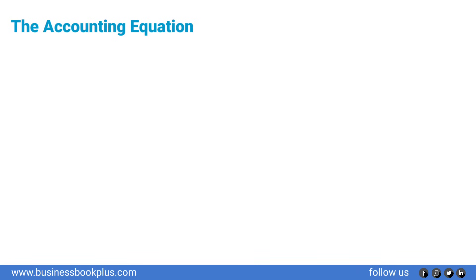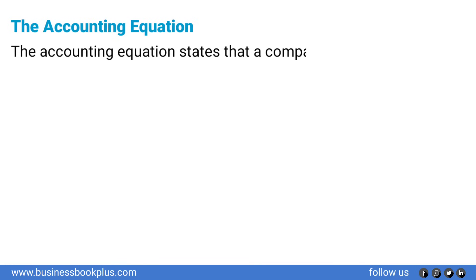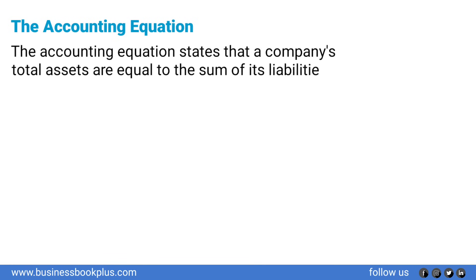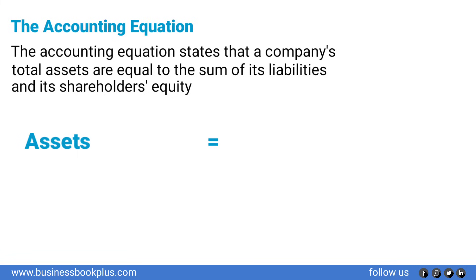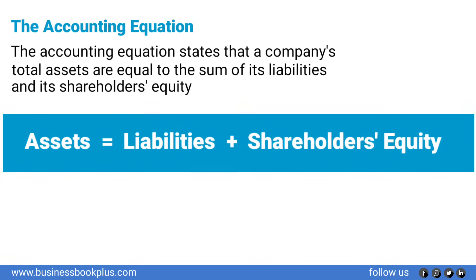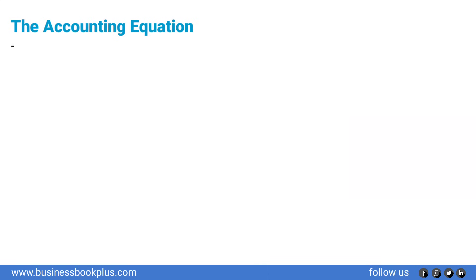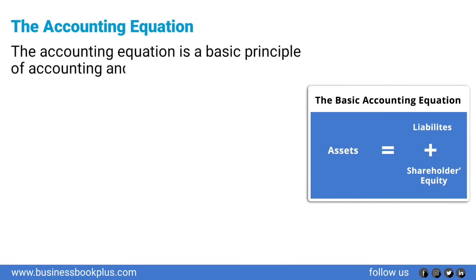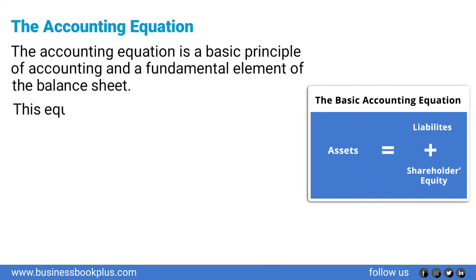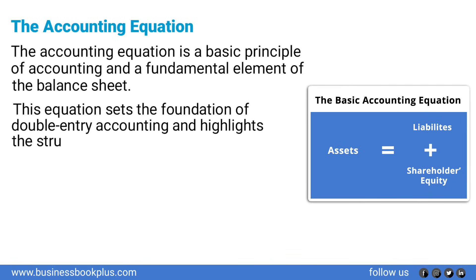The accounting equation states that the company's total assets are equal to the sum of its liabilities and its shareholders' equity. We can write the accounting equation as: Assets = Liabilities + Shareholders' Equity. This equation is also called the balance sheet equation. The accounting equation is a basic principle of accounting and a fundamental element of the balance sheet. This equation sets the foundation of double-entry accounting and highlights the structure of the balance sheet.